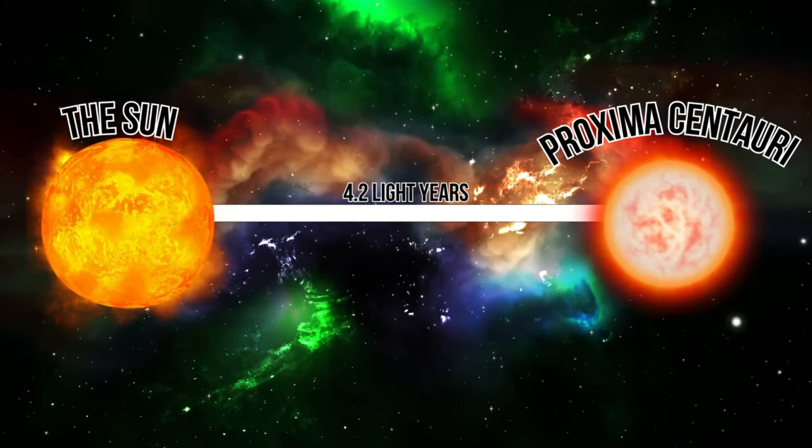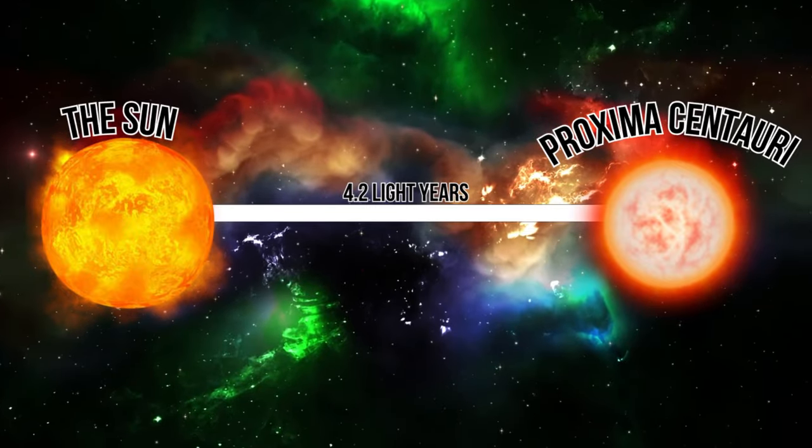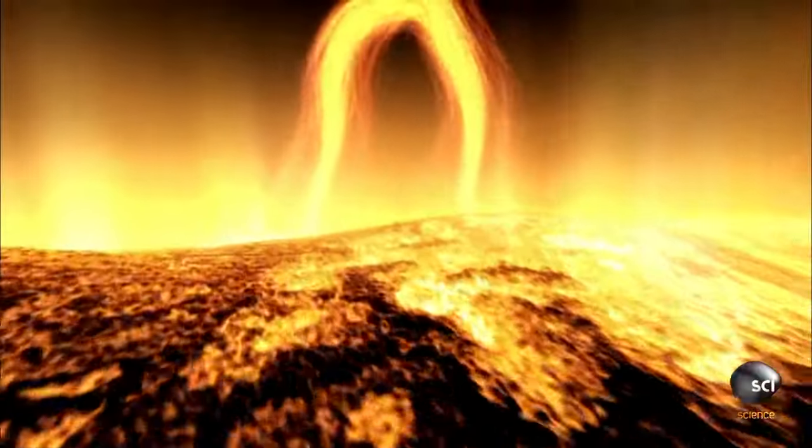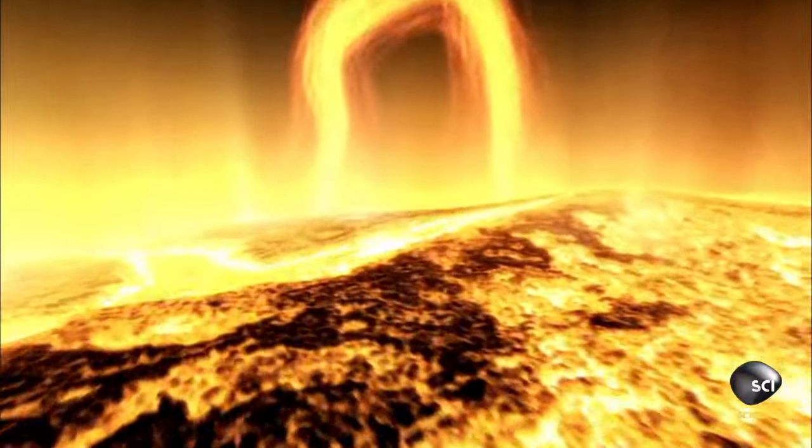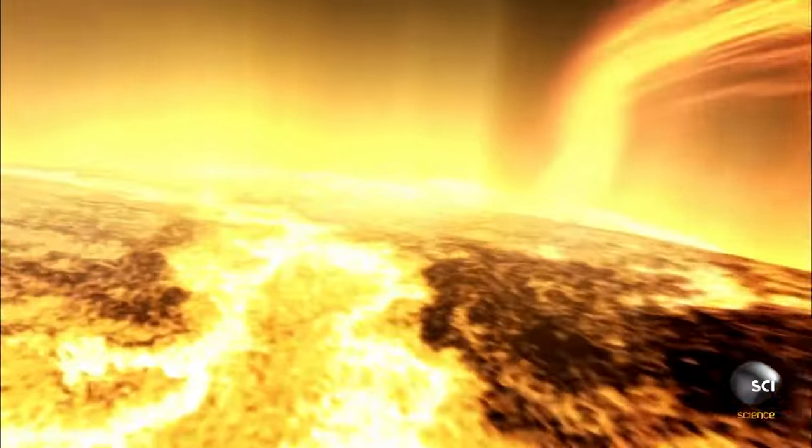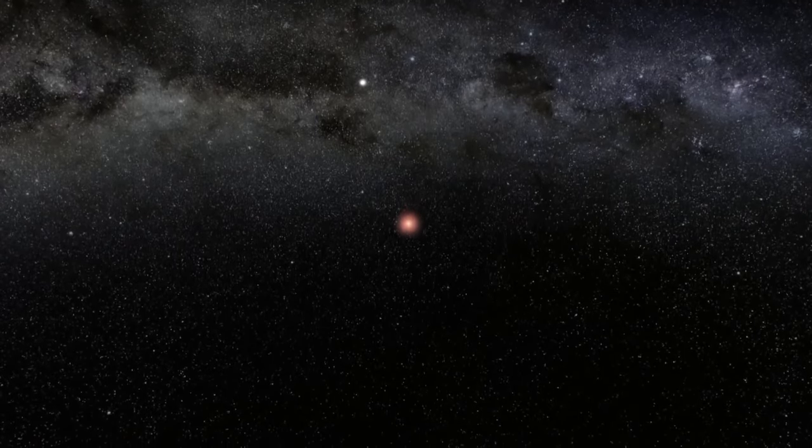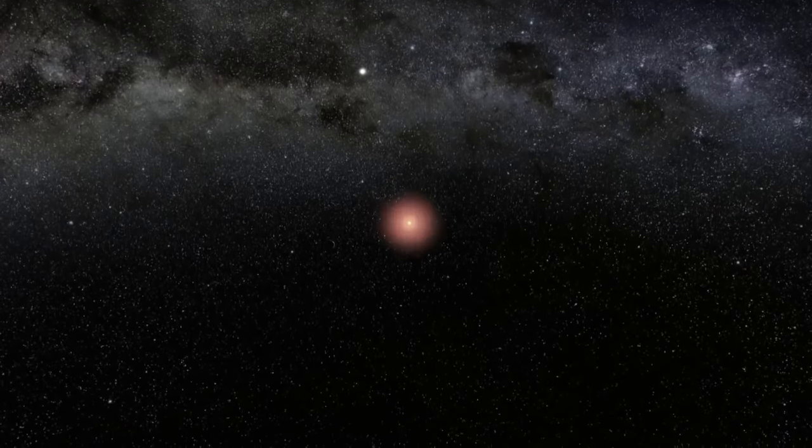Located around 4.2 light years away, the red dwarf star is what is known as a flare star, meaning it randomly undergoes dramatic increase in brightness because of magnetic activity. Proxima has two known exoplanets and one candidate exoplanet.